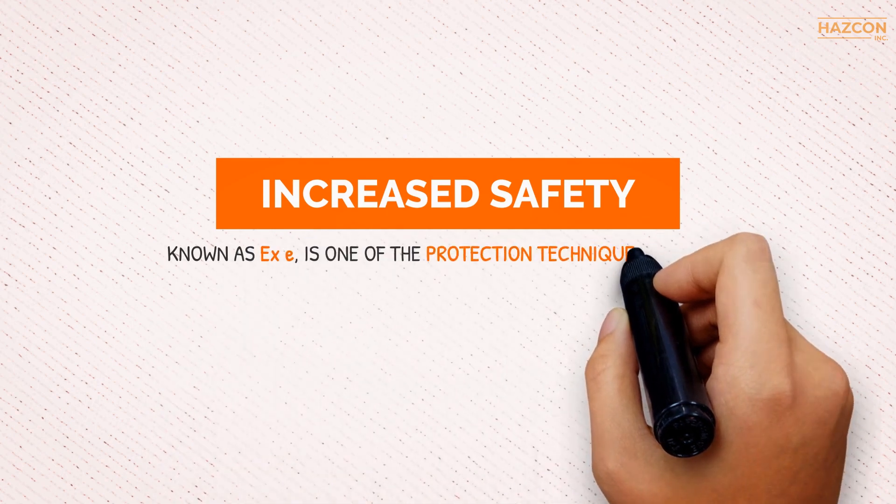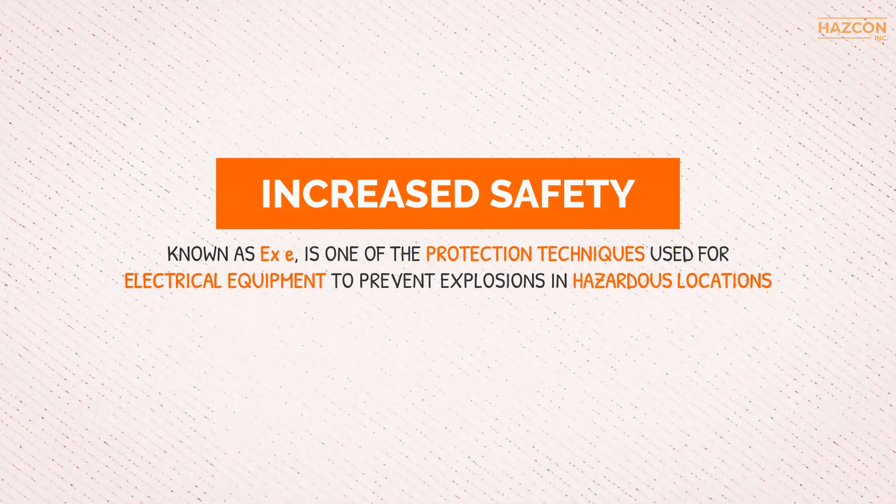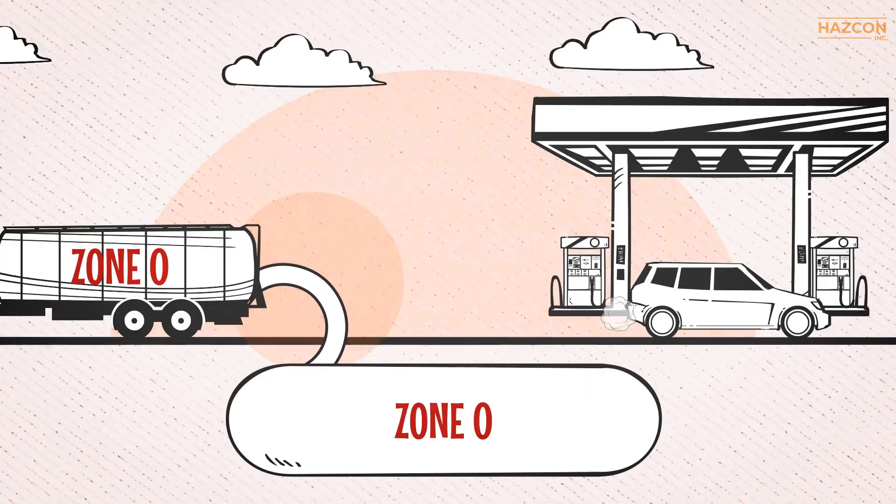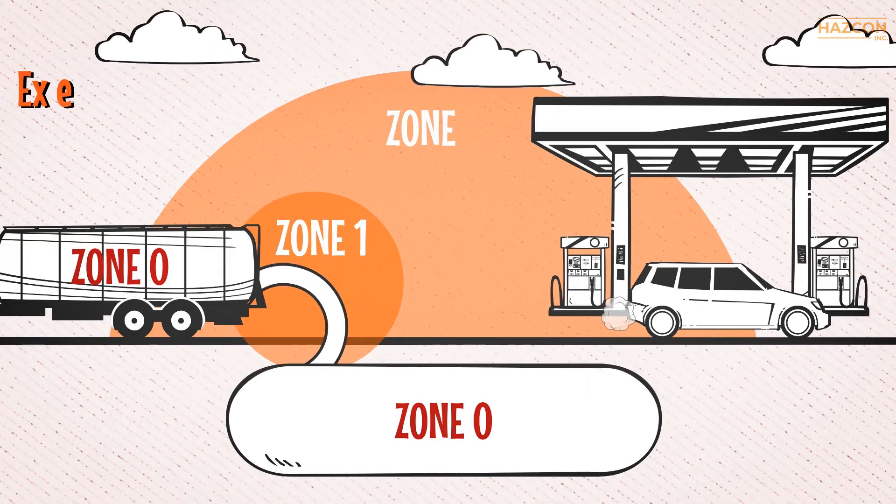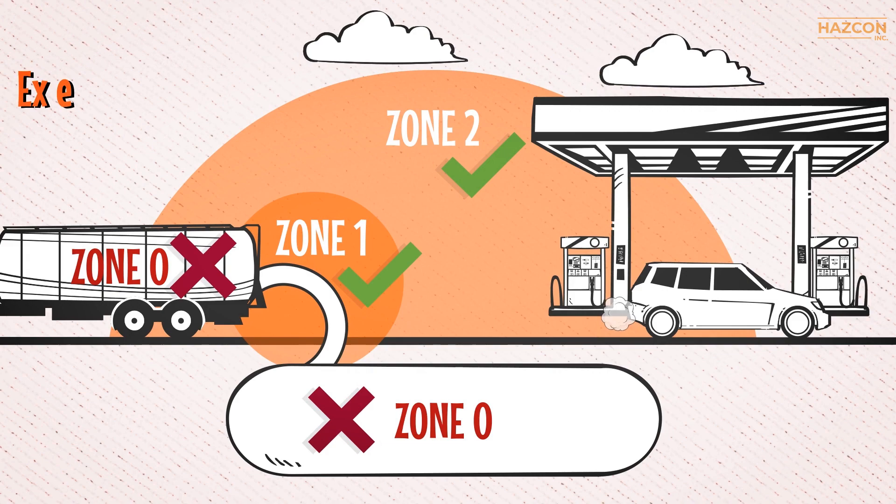Increased safety, known as Ex e, is one of the protection techniques used for electrical equipment to prevent explosions in hazardous locations. This protection concept may only be used in hazardous locations that are Zone 1 and Zone 2.